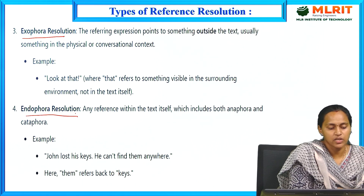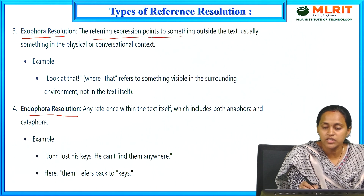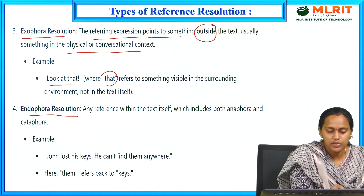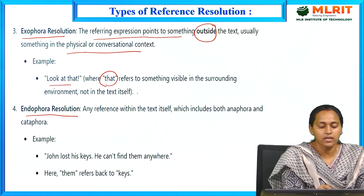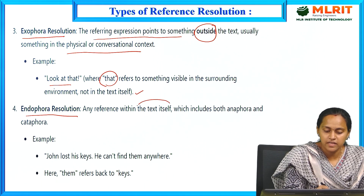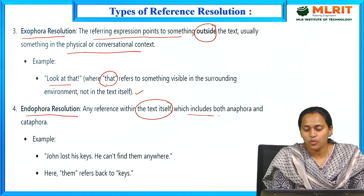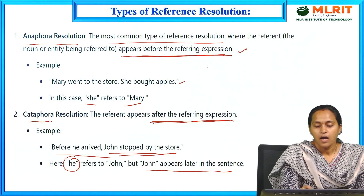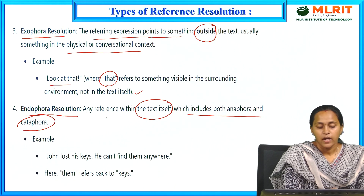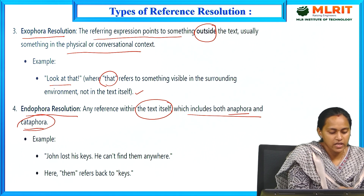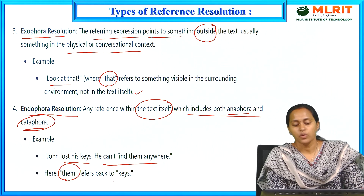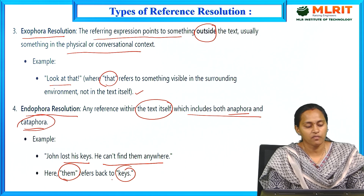Next are exaphora and endaphora resolution. In exaphora resolution, the referring expression points to something outside the text, usually in the physical or conversational context — for example, 'Look at that,' where 'that' refers to something visible in the surrounding environment, not in the text itself. In endaphora resolution, the reference is within the text itself, which includes both anaphora and cataphora. For example: 'John lost his keys. He cannot find them anywhere.' Here, 'them' refers back to 'keys.'